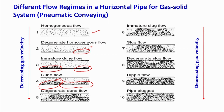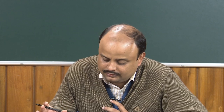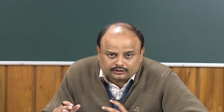If you further reduce the velocity, the whole pipeline becomes slugged. We call it slug flow because the size of the dune becomes equivalent to the size of the pipeline. Just as we talked about gas slugs or liquid slugs, here we are talking about a solid slug — a big solid shape whose diameter equals the pipeline diameter, and this whole slug is actually moving.